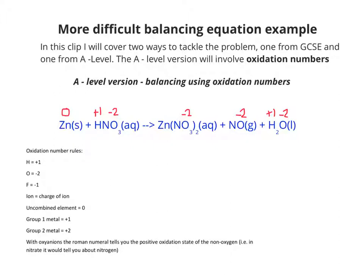So we know that zinc has ions of plus two, so they are the oxidation number as well that's applied to zinc when it's in a compound.